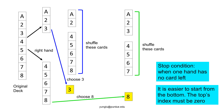This problem has the three essential components of recursion. The stop condition is when one hand has no card left. The change is that each time we take one card from either the left hand or the right hand, so the number of cards decreases by one in one of the two hands. The recurring pattern is that after taking one card, the new problem is similar to the original but the total number of cards decreases by one. We consider the bottom instead of the top because the top card has index zero; when the index reaches zero, only one card is left.